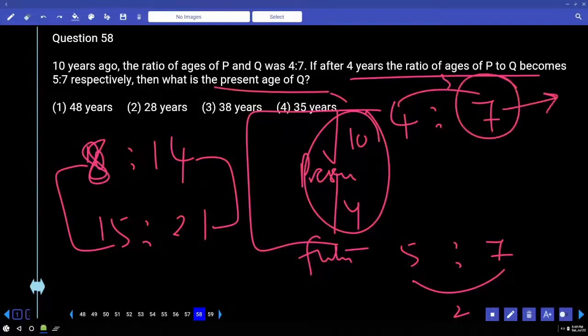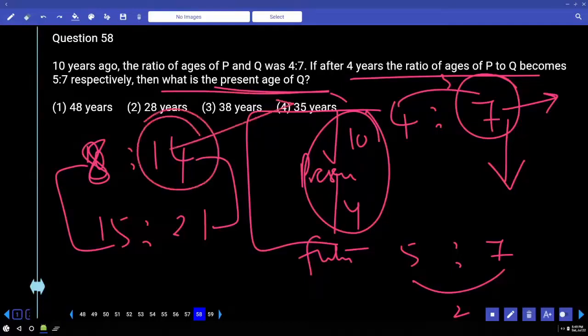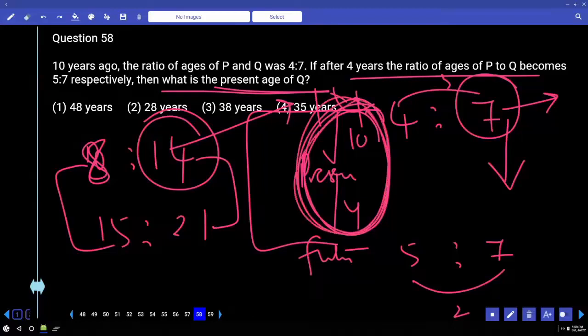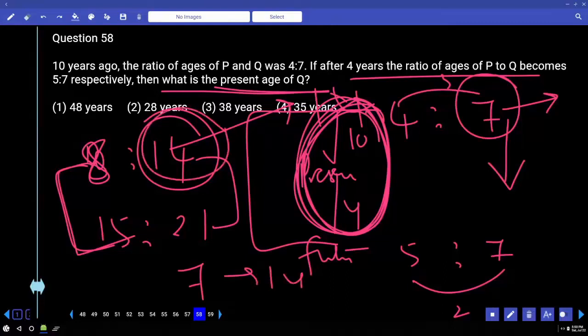Here the age is 14. After 10 years, 24 years. That is the age of... But he is asking for... 2, 14. Then what is the present age of Q? What is the present age of Q? 14 parts, 14. So now present 14 plus 10. 14 parts, 14. What is the present age of Q? Seven parts, 14. 1 part 2, 14 part 28. 28 plus 10? 38.